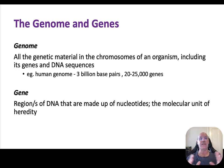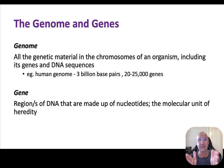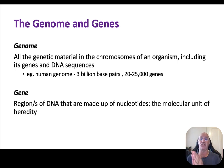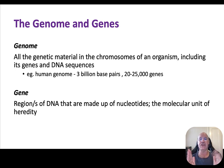The genome is all of the genetic material in the chromosomes of an organism. It includes the genes, the sequence of the DNA, and also other DNA that is non-coding. For example, with a human, we have 3 billion base pairs and 20,000 to 25,000 different genes. A gene is a region or regions of DNA made up of nucleotides in a specific sequence, and it's that sequence in a gene that's the molecular unit of heredity.